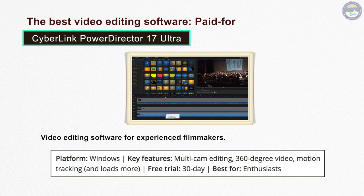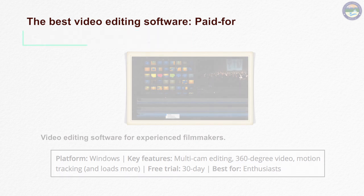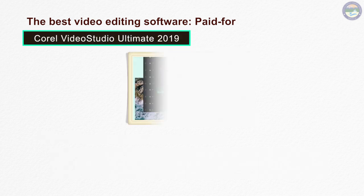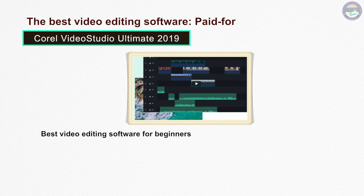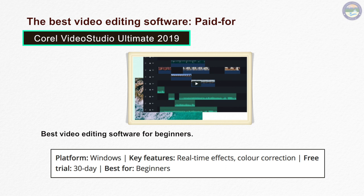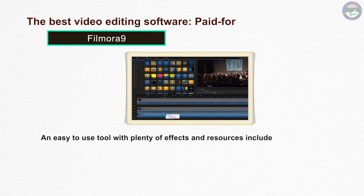Corel द्वारा बनाया गया Video Studio एक बेहतरीन video editing software है। ये दो versions में आता है - Pro और Ultimate। दोनों एक जैसे ही हैं, लेकिन Ultimate में ज़्यादा premium features उपलब्ध हैं। अगर आप नए हैं तो इसके Pro version से शुरुआत कर सकते हैं और बाद में Ultimate का इस्तेमाल करें।